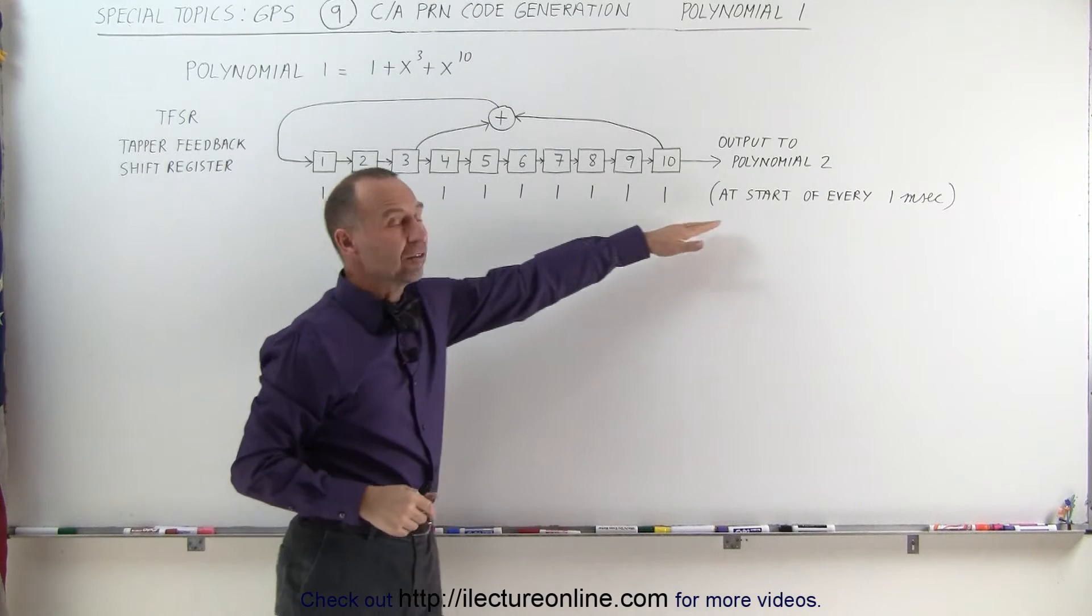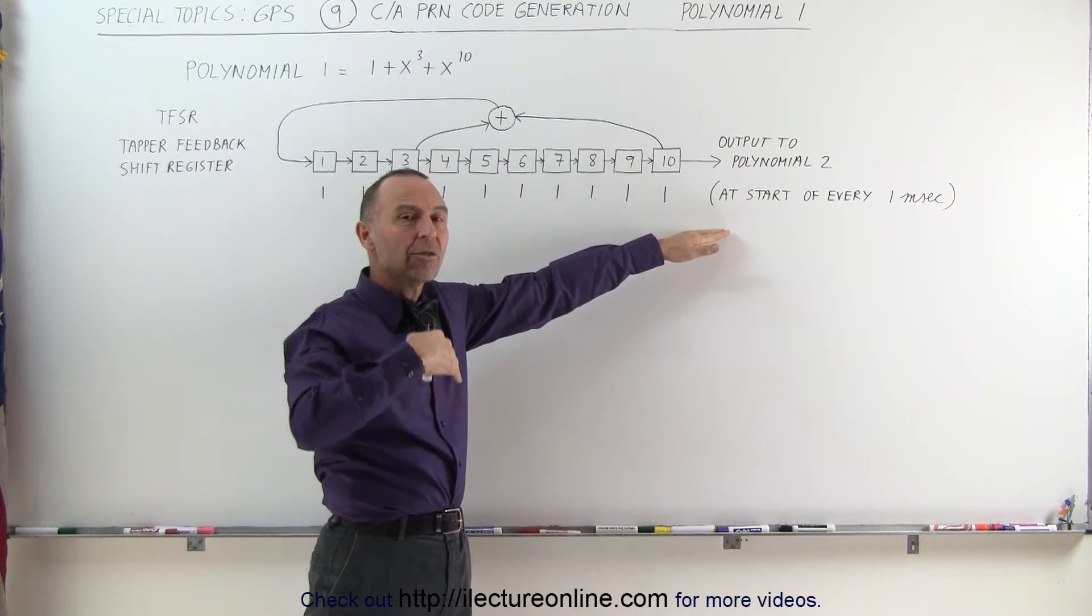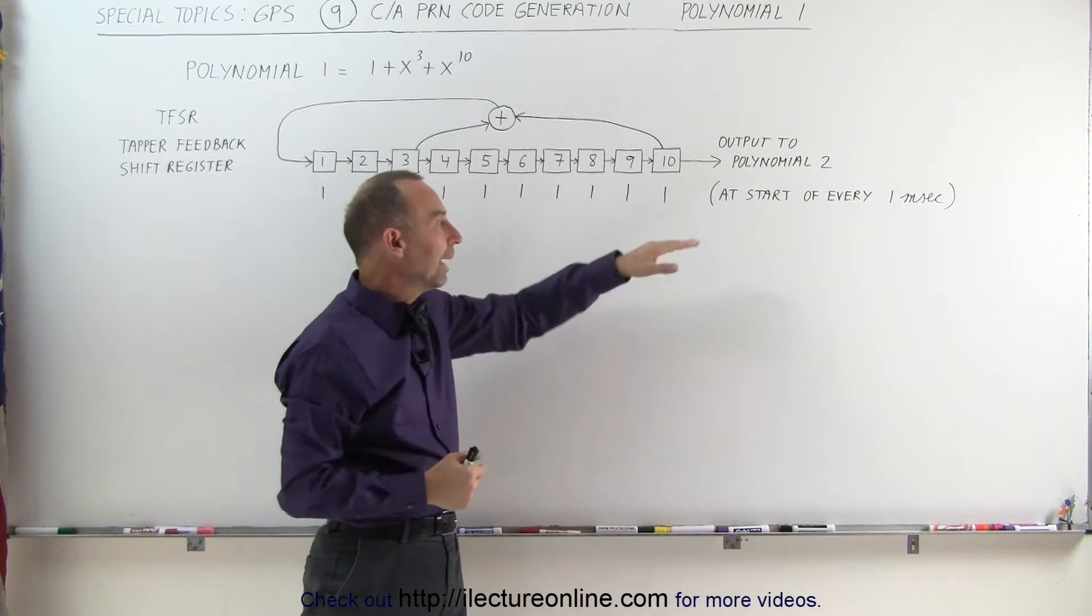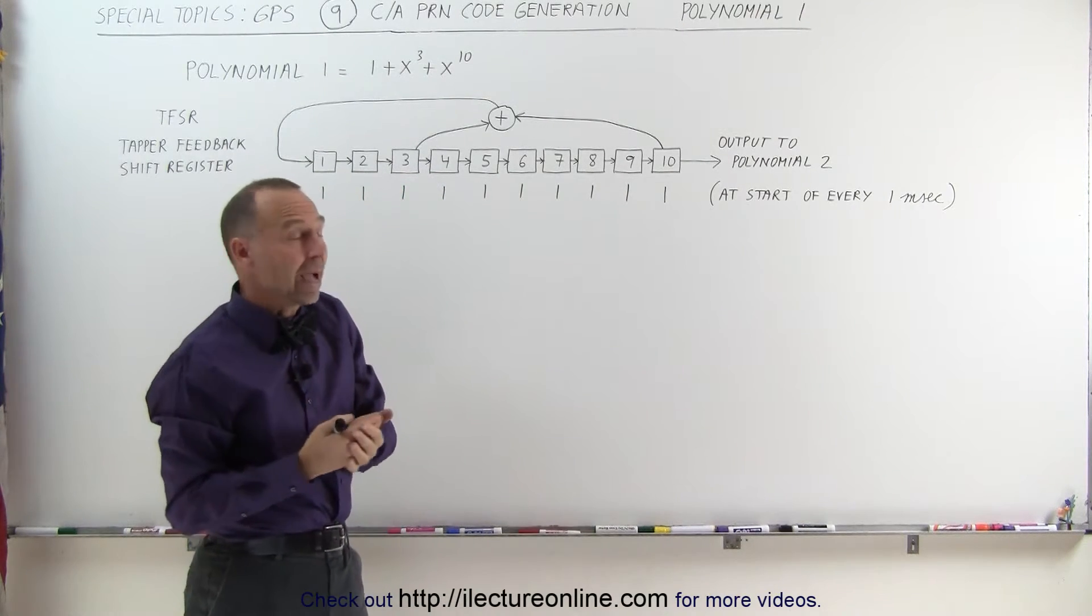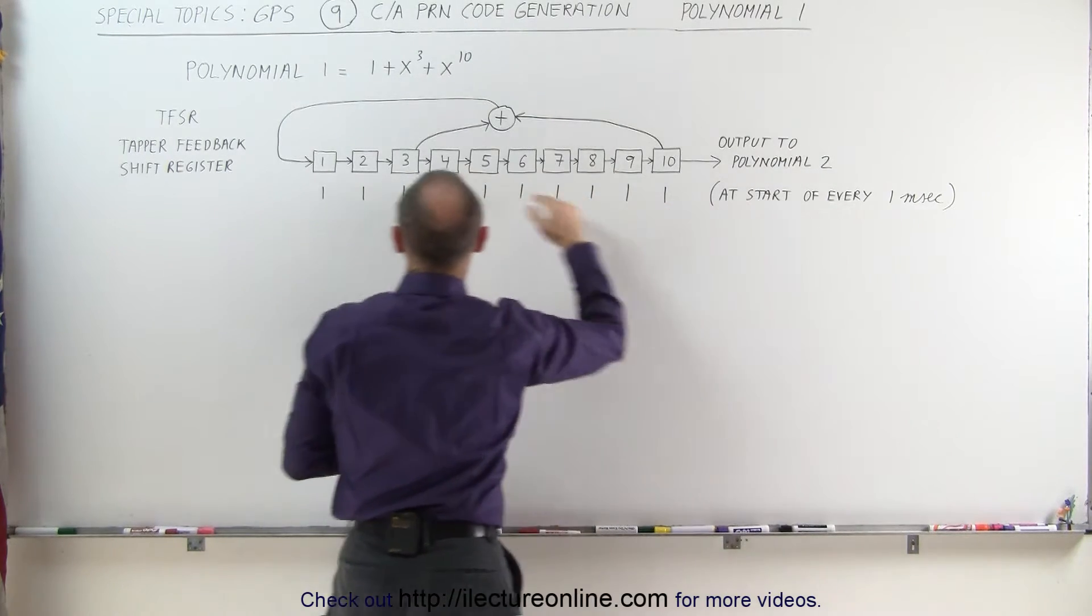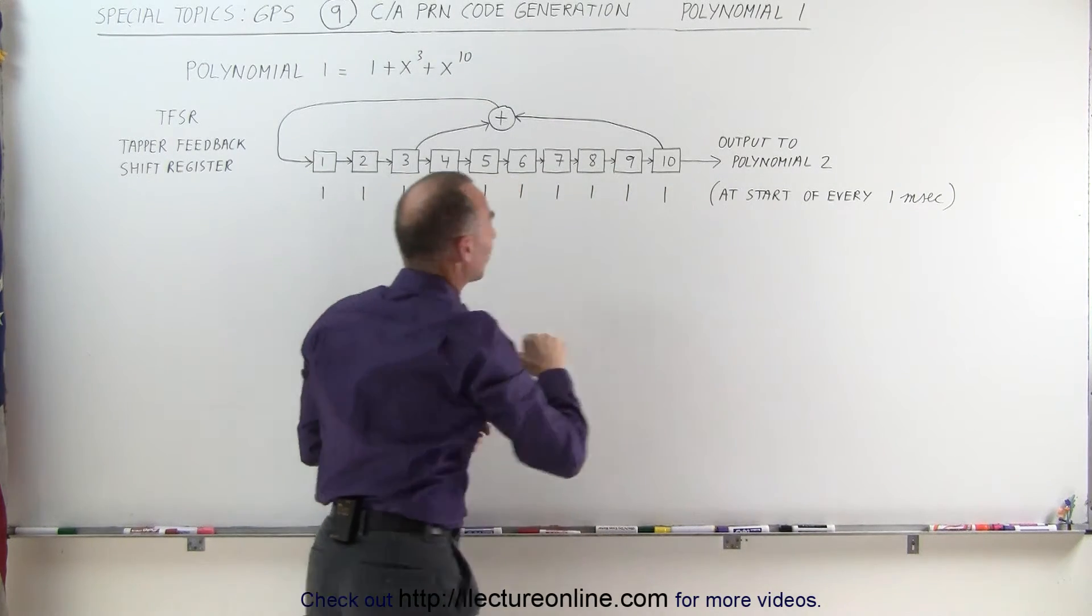At the beginning of each 1 millisecond, remember there's going to be 1023 bits of information or chips being sent out and so we need to go through this process 1023 times. At the beginning of every millisecond, we reset all the bits in the register back to 1.